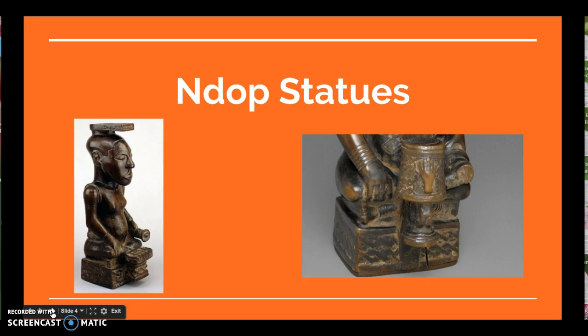Notice how the arms of the N'Dop extend vertically. The left hand holds a ceremonial knife, and the right hand is rested on the knee. The artists carved particular objects that represent the prestige and power of the ruler the statue was meant to honor.